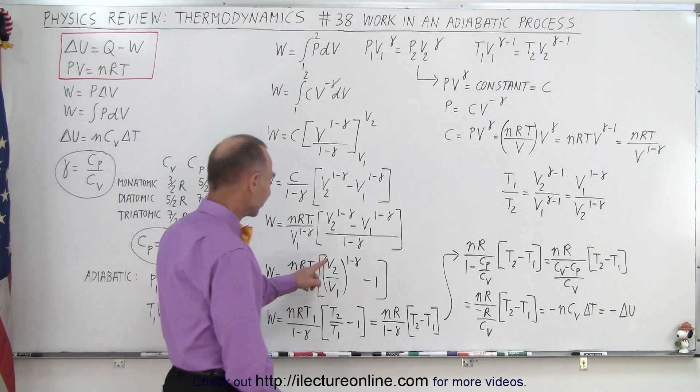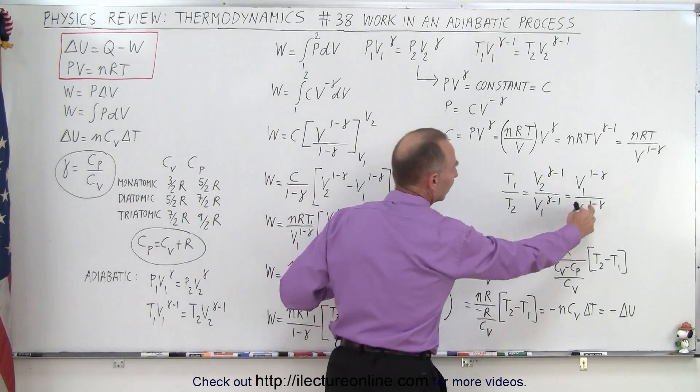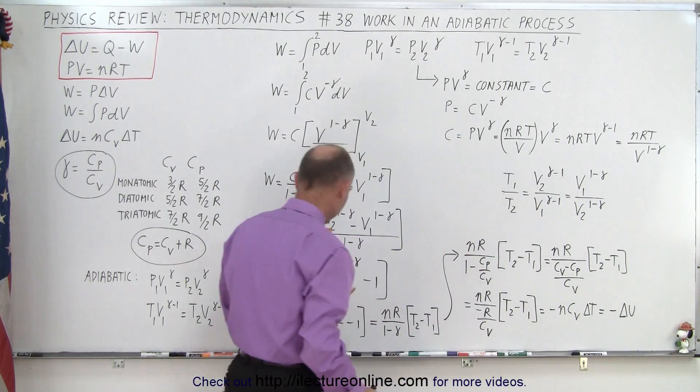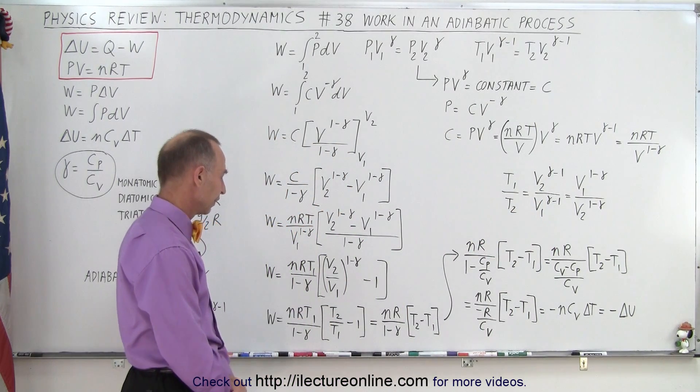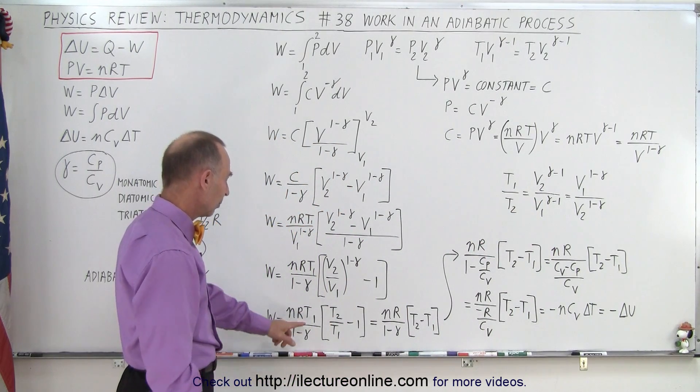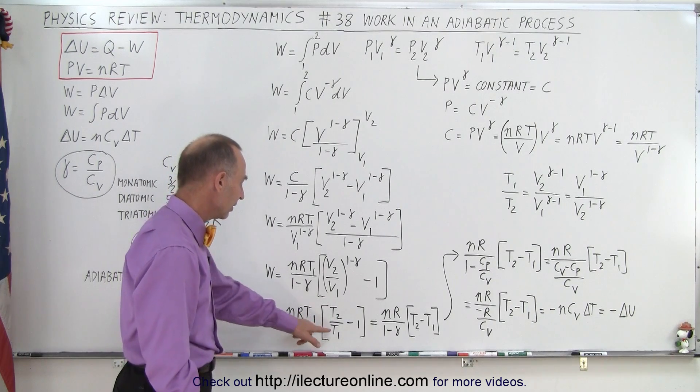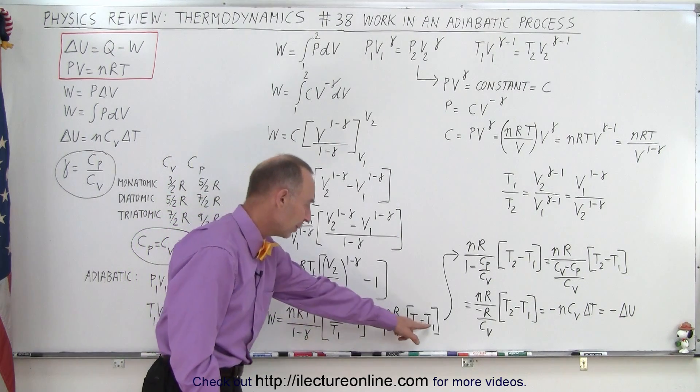And then realizing that V2 over V1 to the 1 minus gamma is the inverse of this, so I can then replace that by T2 over T1. And then multiplying this by T1, the T1 disappears here, and I end up with the T1 on the other side.